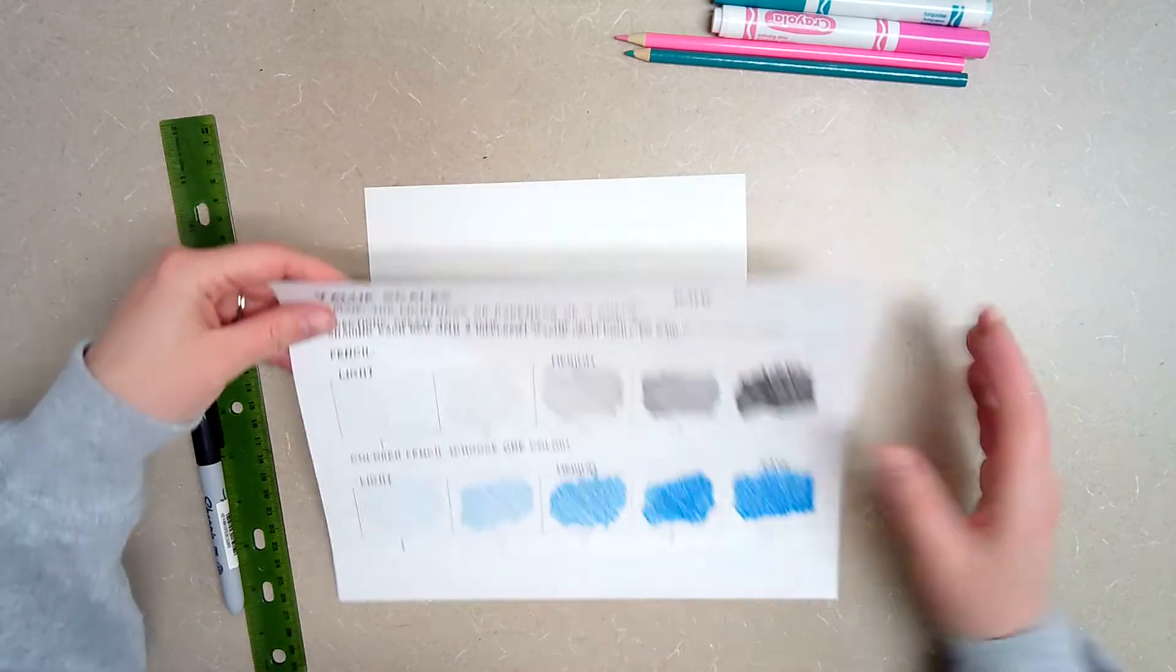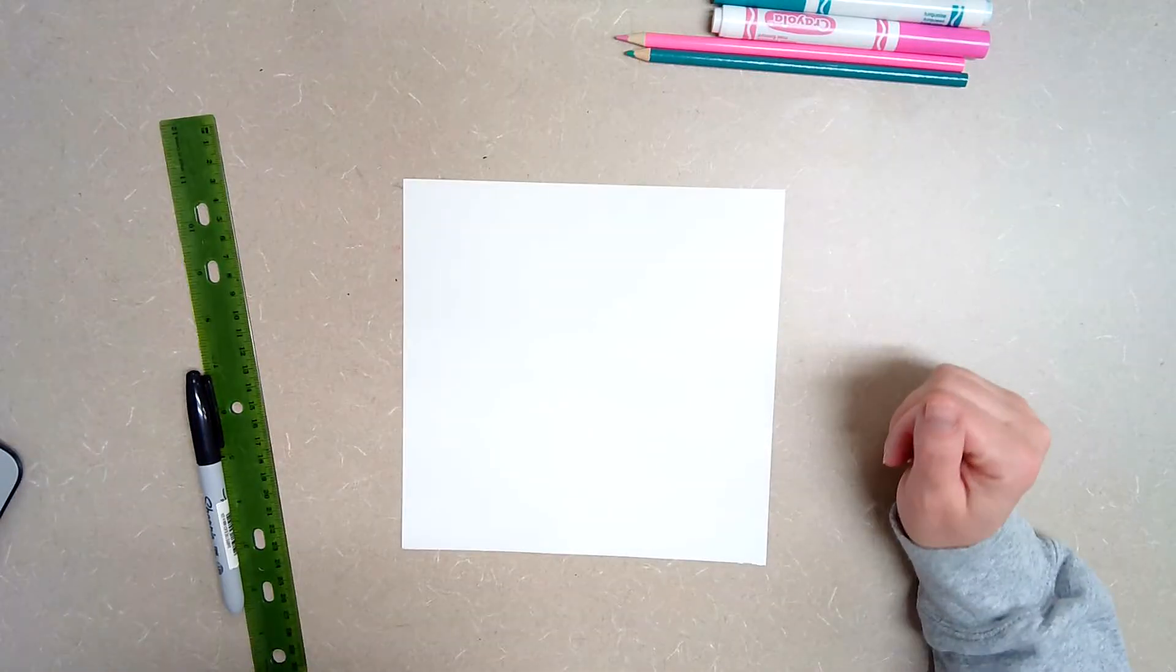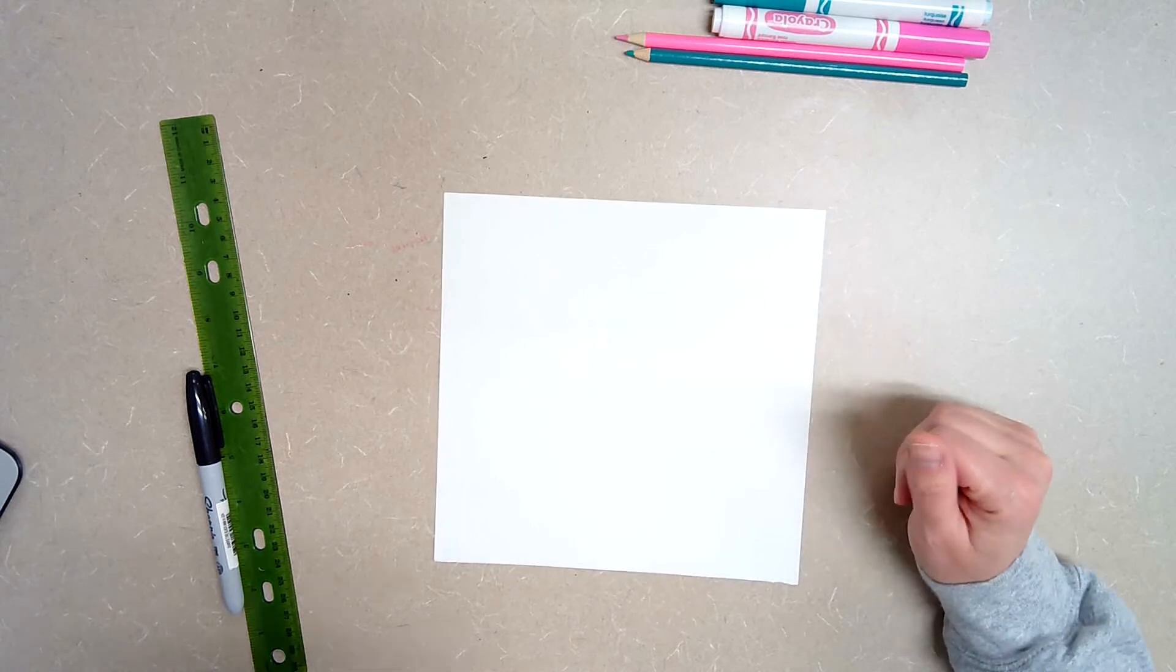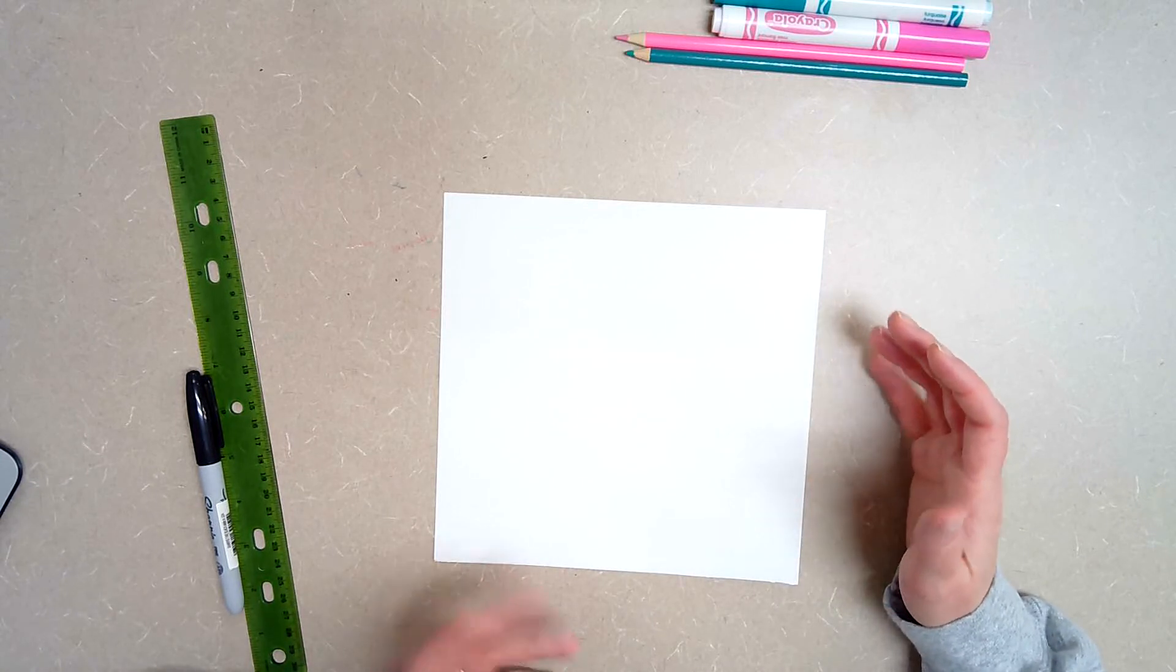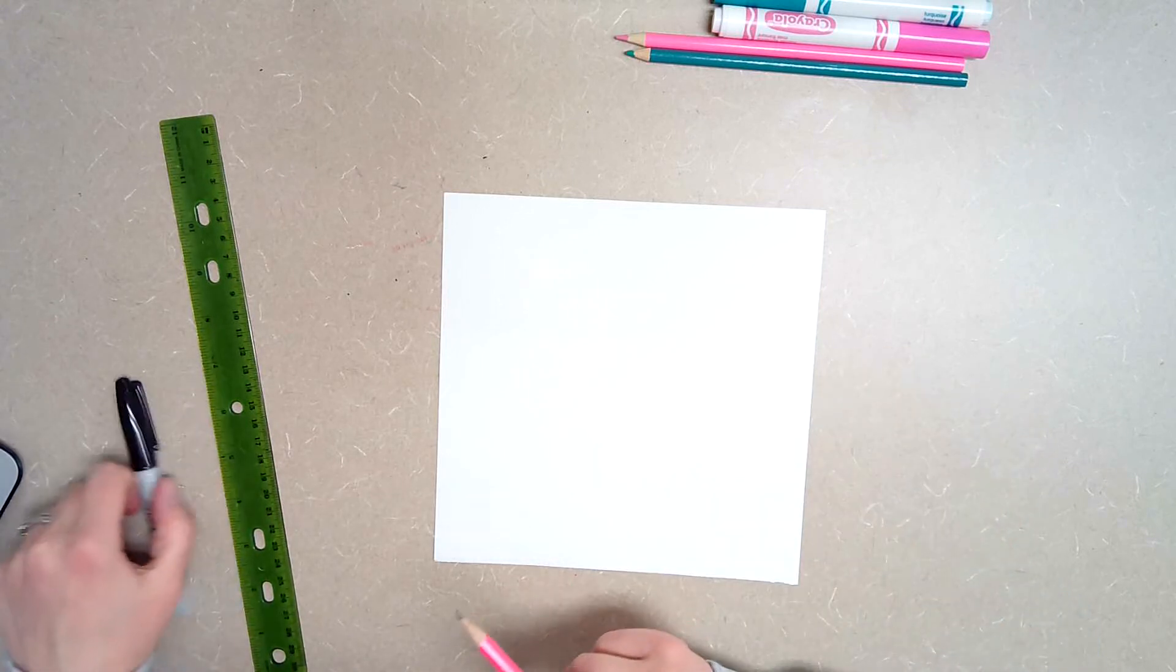So I am going to show you the project and break it down for you step by step. The supplies you are going to need for today's project are a blank piece of paper. This one is a smaller piece of paper, like an eight by eight square. You can use a regular piece of paper or you can cut a regular piece of paper down to size.